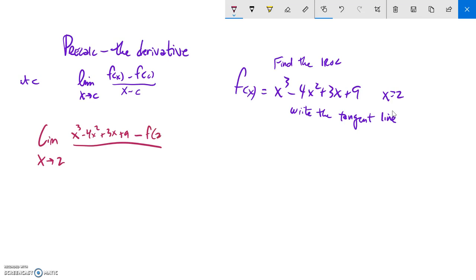Then x minus 2. Notice that this is the general point y over x, and this is a specific point y over x where x is 2, and we're letting x get really close to 2. So I need to find f(2).